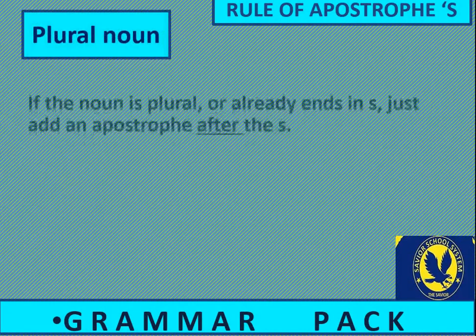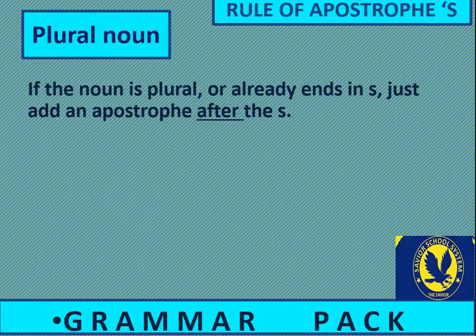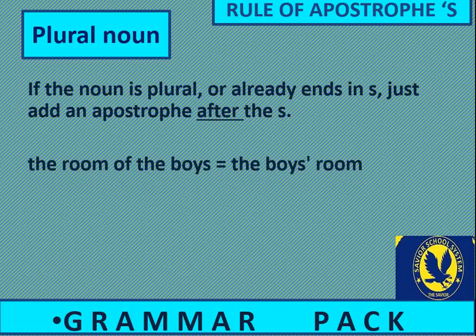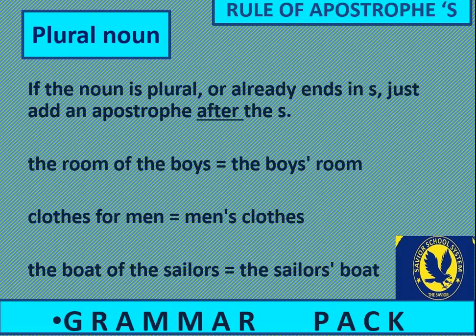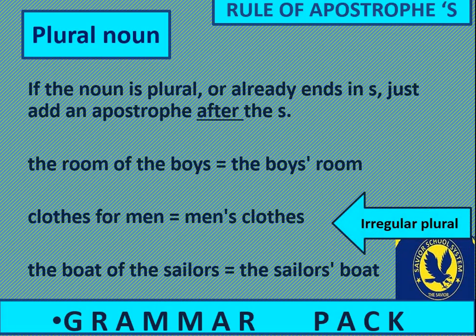For plural nouns: if the noun is plural or already ends in s, just add an apostrophe after the s. For example: the room of the boys becomes the boys' room; clothes for men becomes men's clothes; the boat of the sailors becomes the sailors' boat. Note that 'men' is an irregular plural — its plural is men, not mans — so apostrophe s becomes apostrophe s accordingly.